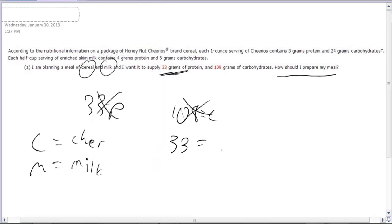33 should be equal to - all right, so now, how much protein is in my Cheerios? So protein equation. How much protein is in my Cheerios? I go up here and find it. Cheerios contains 3 grams of protein. So for every serving of Cheerios I eat, I'm going to have 3 grams of protein. Now, how much protein does milk have in it? Milk has 4 grams of protein. So 4 grams for every glass of milk. There's one equation.